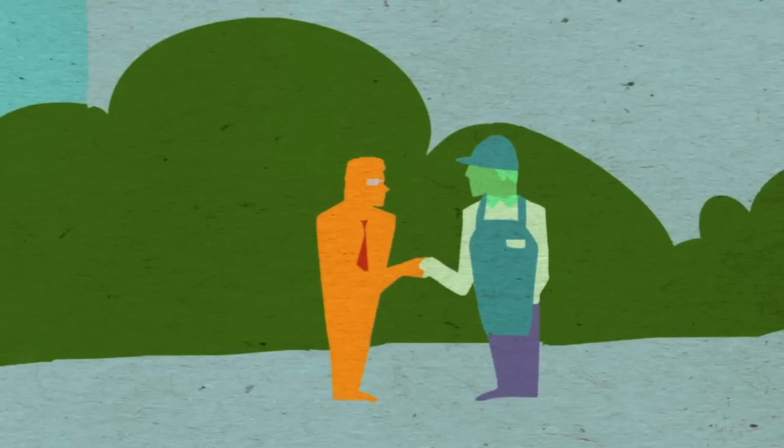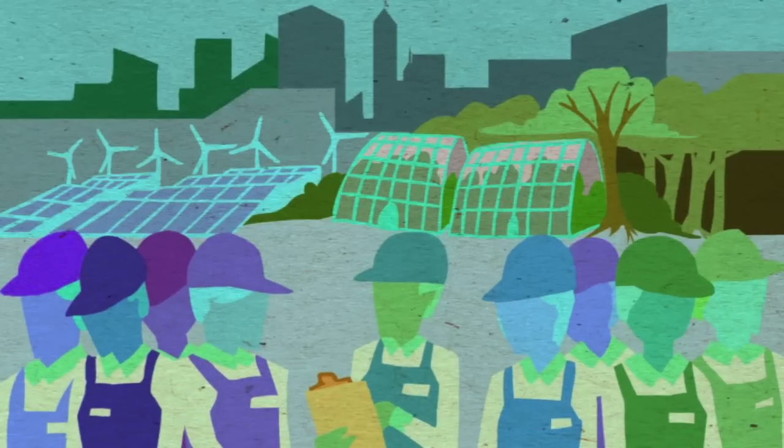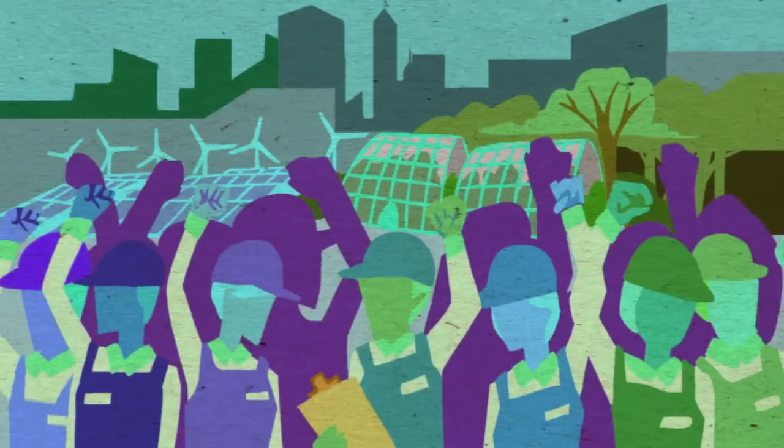In the Cleveland model, these businesses are worker cooperatives, owned by their own workers. Each worker owner has an equal share and a voice in the way the company is run.